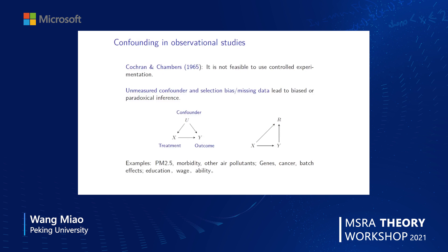That is, the marginal association between X and Y will be opposite to the conditional association given the confounder U. On the right-hand side is the graph for the missing data problem. If the missingness depends on both education and wage, then the inference based solely on the observed data will be biased for causal inference about the effect of education on wage.